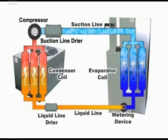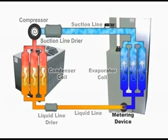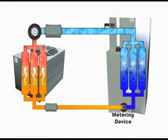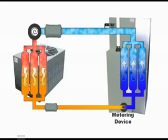The metering device is a good starting point as it is the start of the low pressure side of the refrigerant system loop. The metering device functions as a restrictor or regulator for the refrigerant. On the input side of the metering device, the refrigerant is at a high pressure, high temperature.